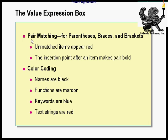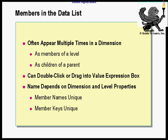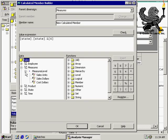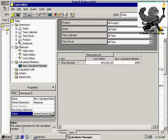Let's talk about the value expression box features. You have pair matching — parentheses automatically become bold. You have color coding: names are blank, functions are maroon, keywords are blue, and text strings are red. The icons available are cube, dimension, hierarchy, level, and member. As far as the data list, members can appear multiple times in a dimension as members of a level or as children of a parent. You could double-click or drag into the value expression box. Member names are unique and member keys are unique as well.